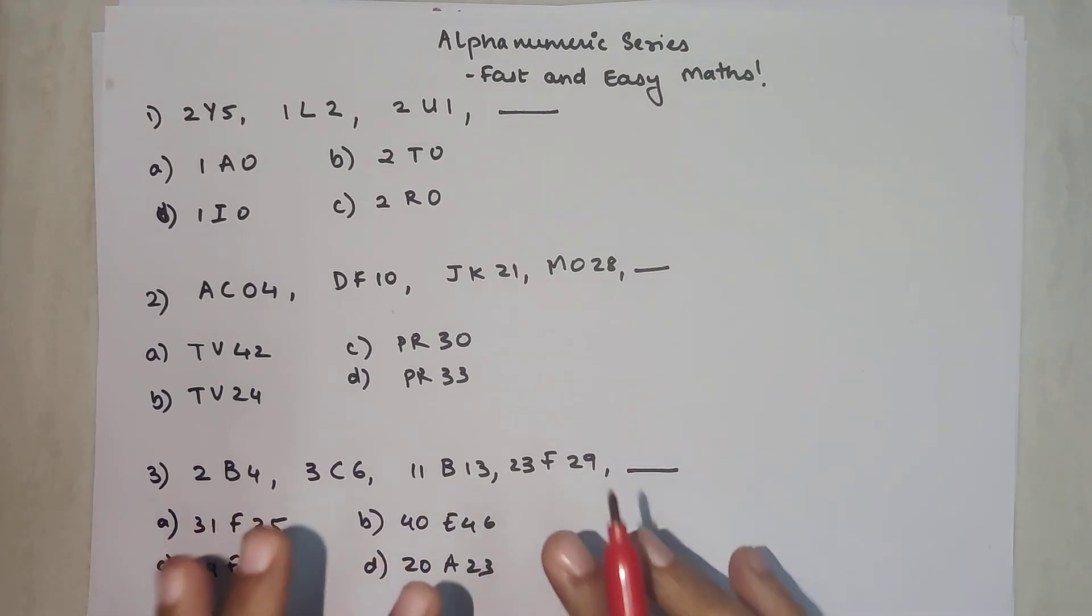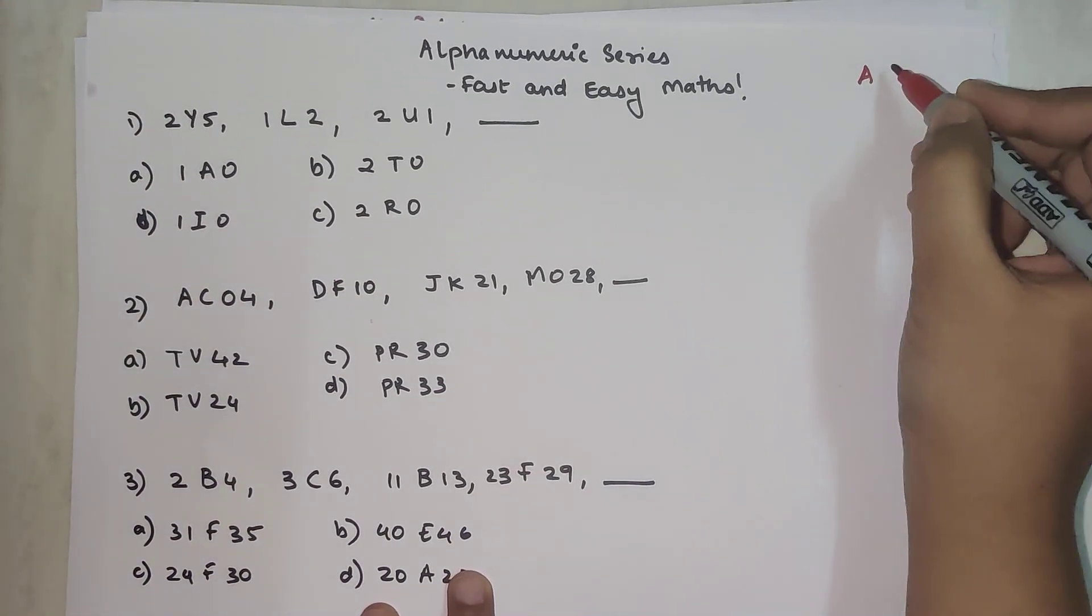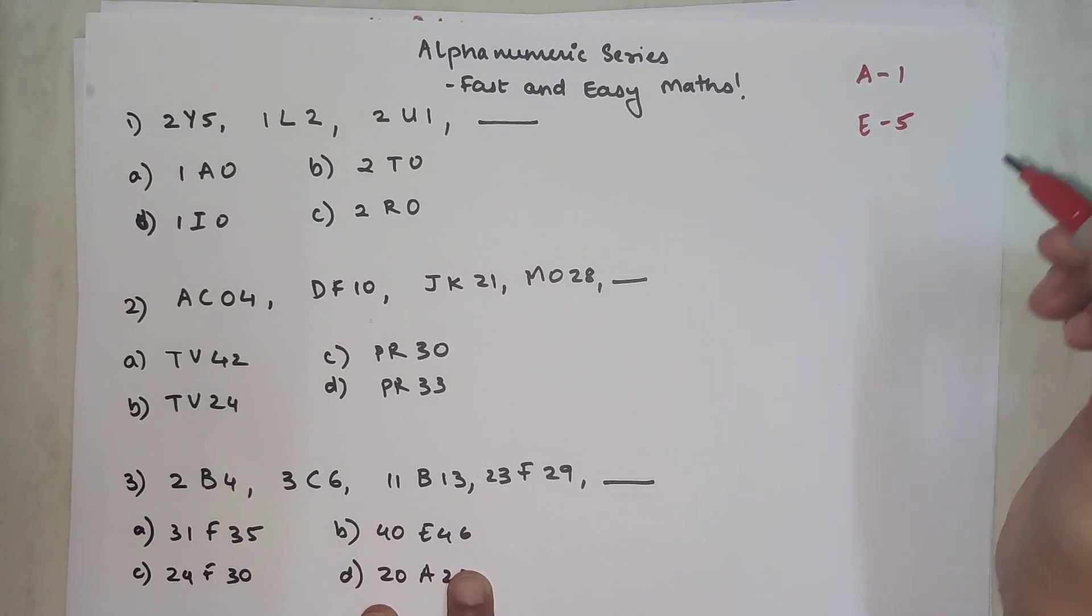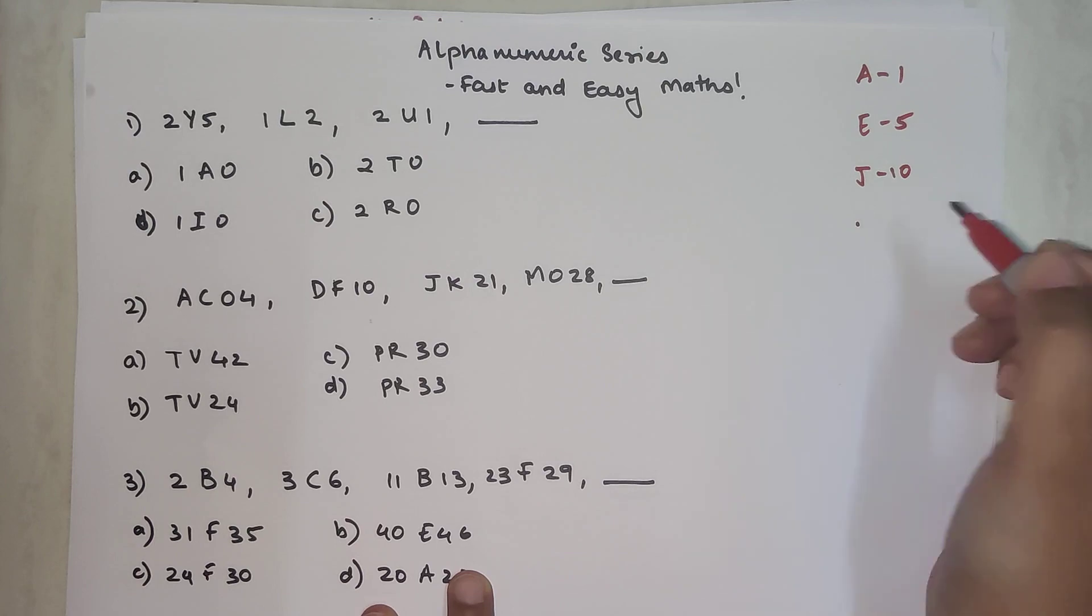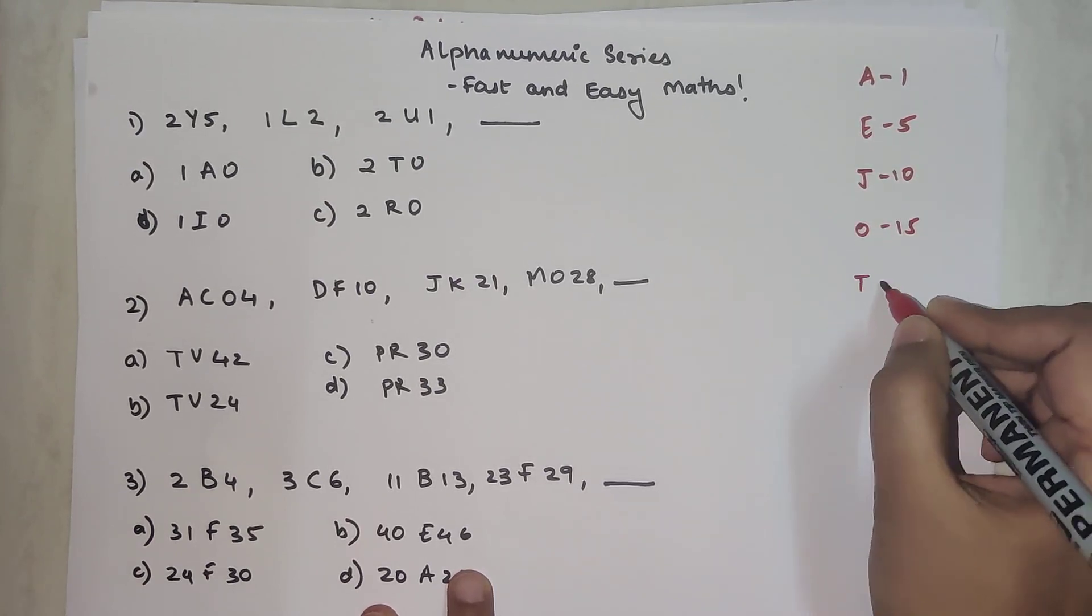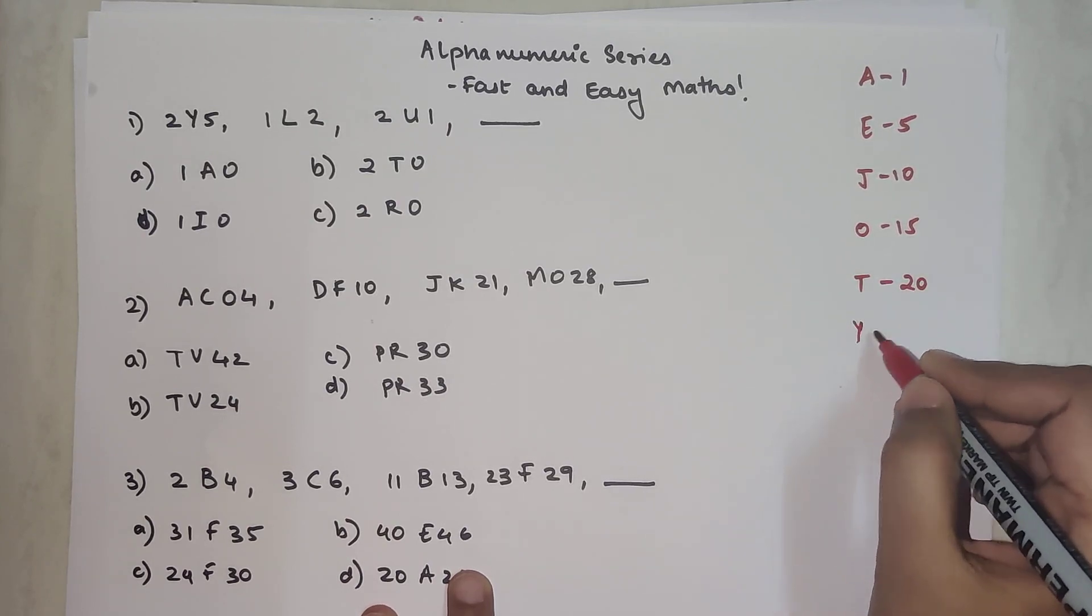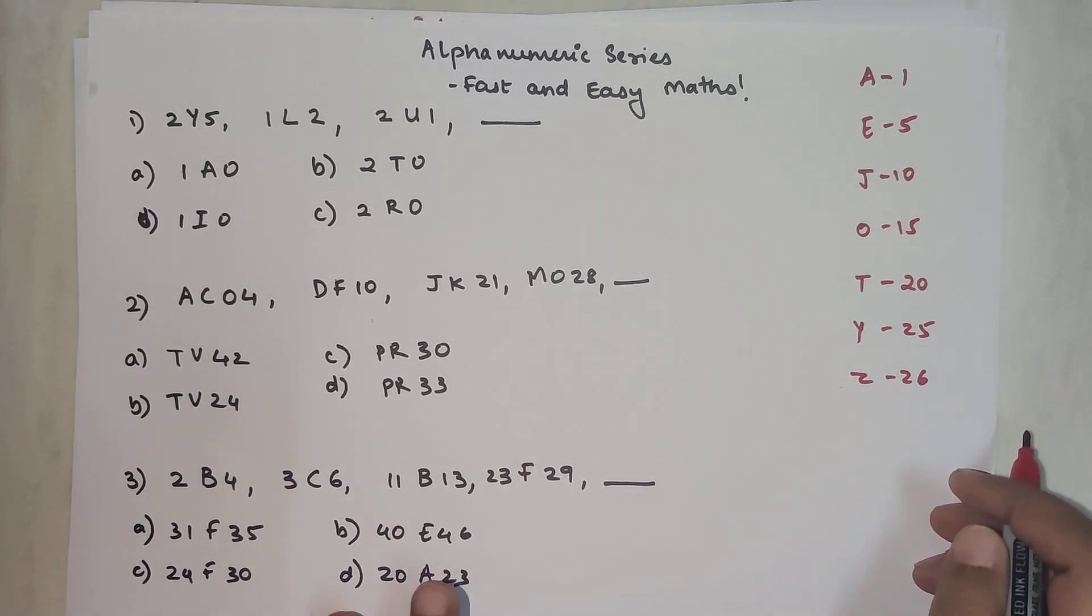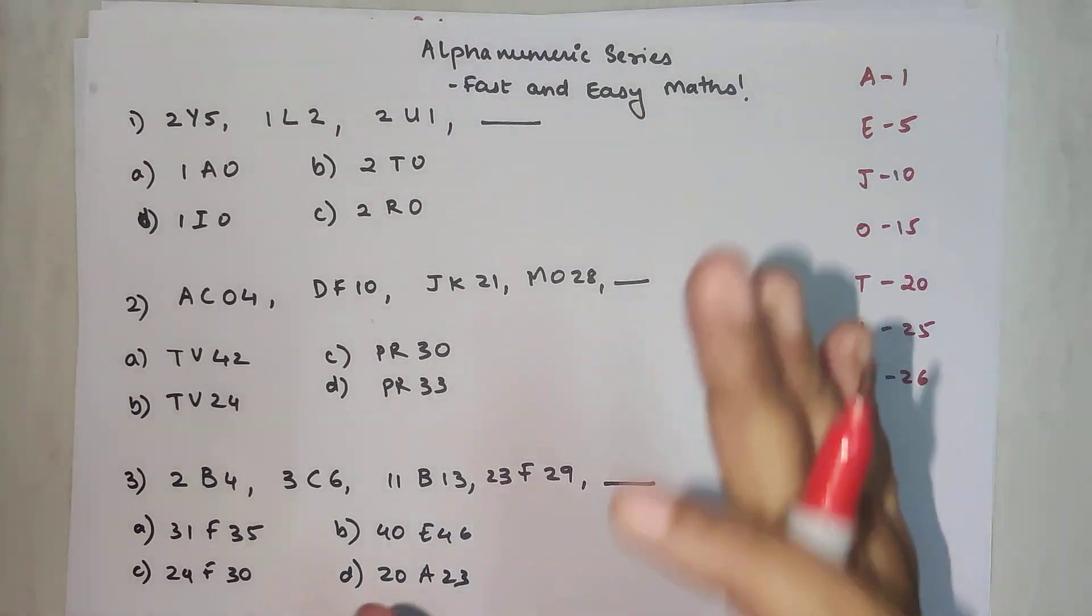Before beginning with alphanumeric series, you need to have certain ground rules. You need to remember A is the first letter, E is the fifth letter, J is the tenth letter, then we have O which is fifteenth letter, then T which is twentieth letter. Y is the twenty-fifth letter and Z is the twenty-sixth letter.